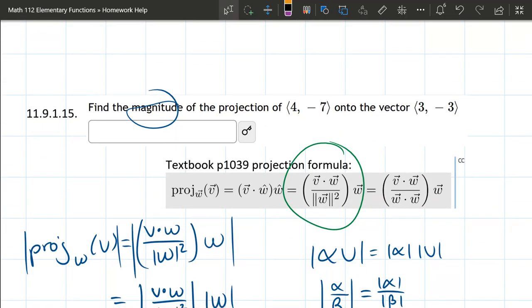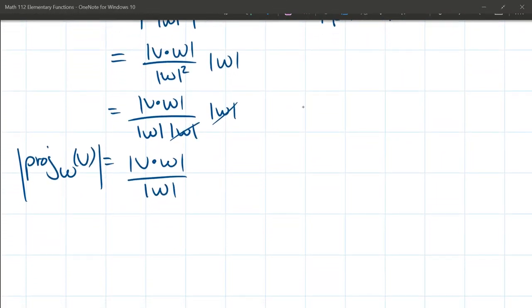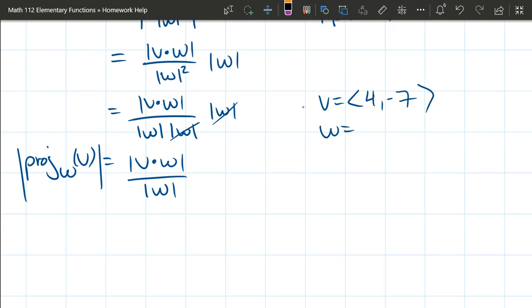Alright, this is important, the order that you do. So I always think of the vector that's written higher up as projecting down on the vector that's written below. So this projection, this means projection of v down onto w. So that means this 4, negative 7 is v, and 3, negative 3 is w. So I'm going to rewrite those here. V is 4, negative 7, w is 3, negative 3. And we'll start filling those values in.